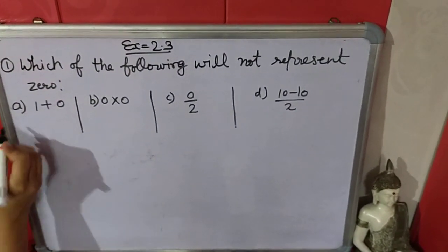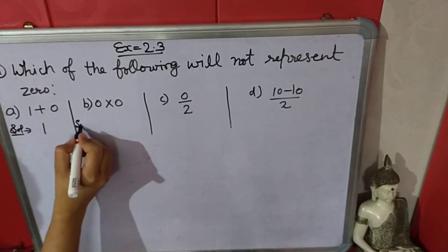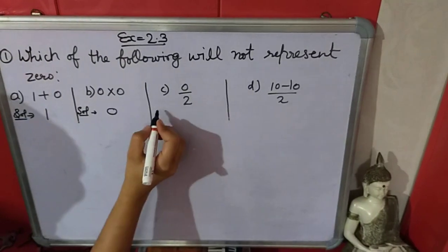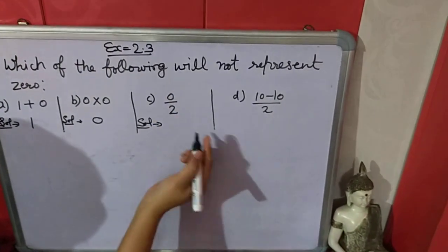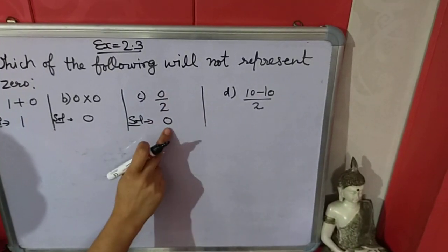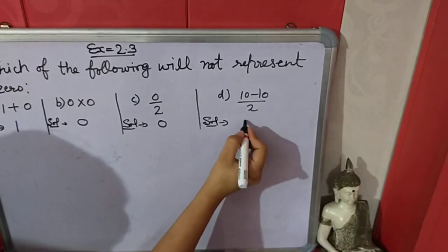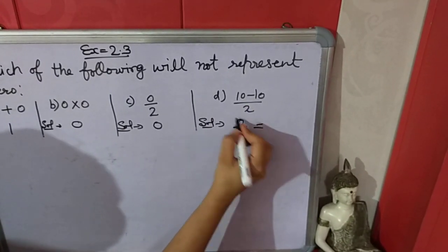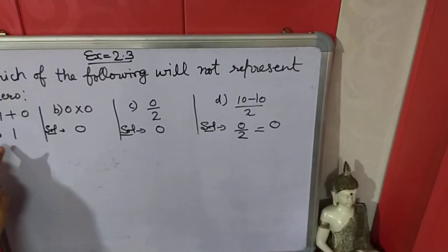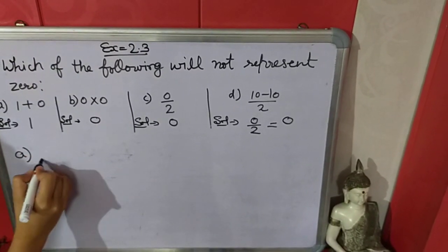So we have to solve these parts. First part: 1 plus 0 equals 1. 0 multiply 0 equals 0. 0 divide by 2 equals 0, because when 0 is divided by any number then quotient will be 0. 10 minus 10 equals 0. 0 upon 2 equals 0. 0 upon 2 will be 0.